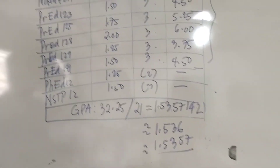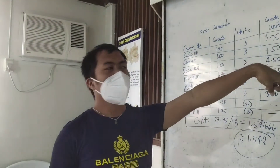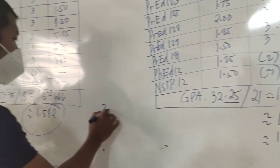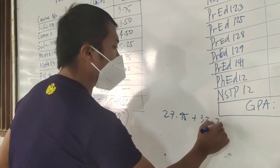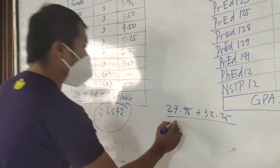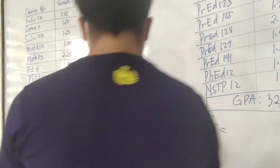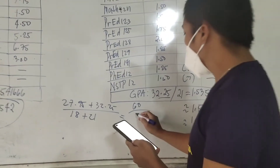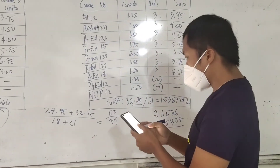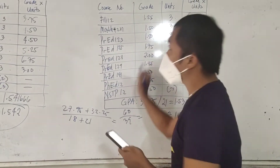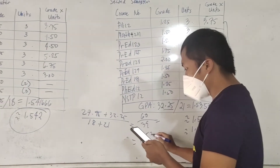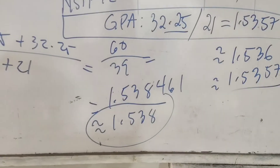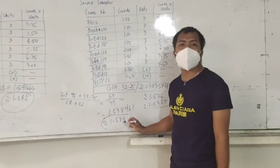Now to compute the GPA for the whole year, add 27.75 and 32.25, then divide by the total units — 18 plus 21 equals 39. So 60 divided by 39 gives approximately 1.538 for the full year GPA. This means the student qualifies as a college honor.